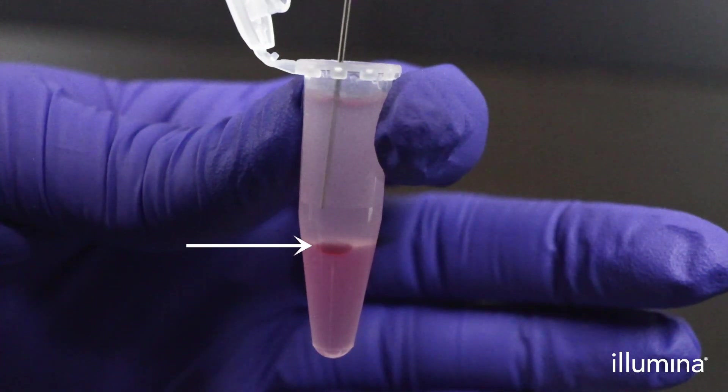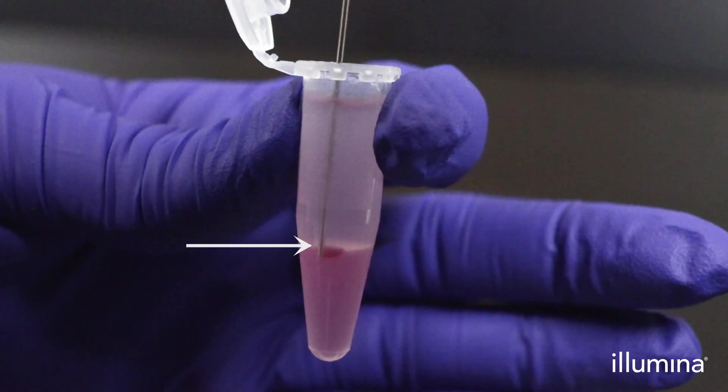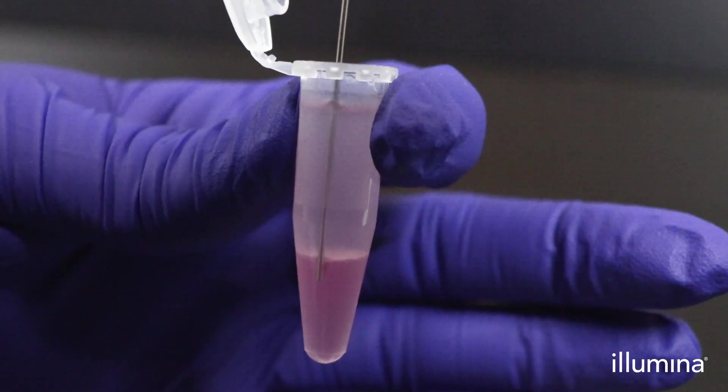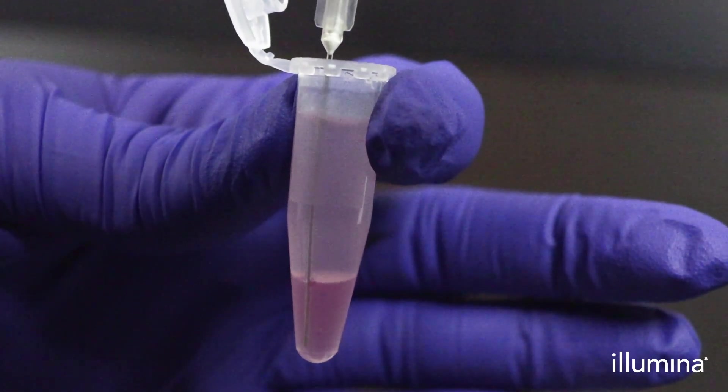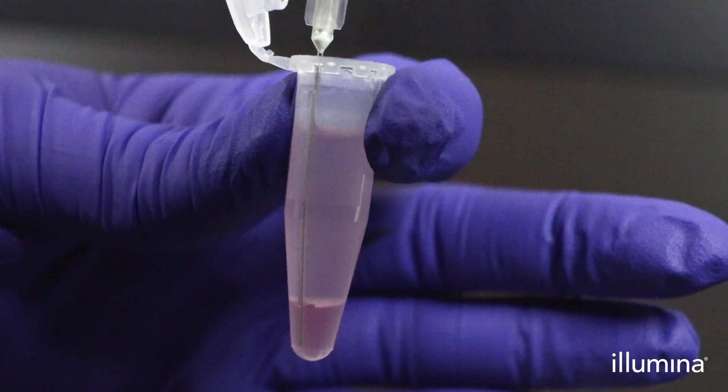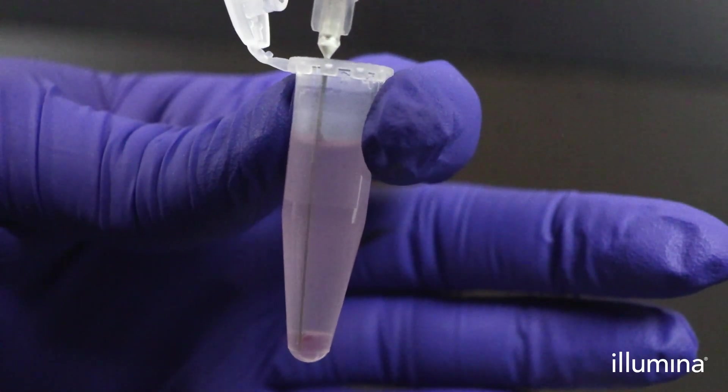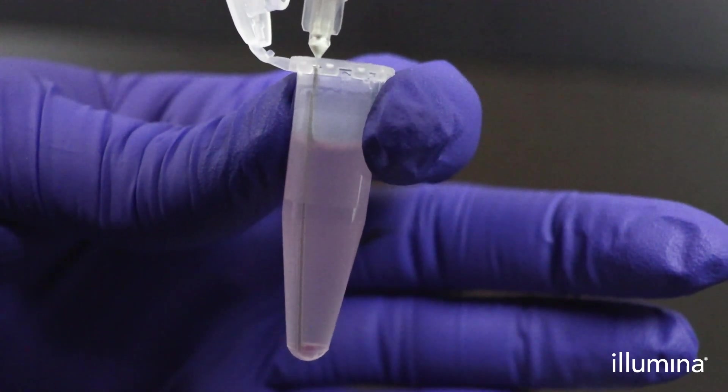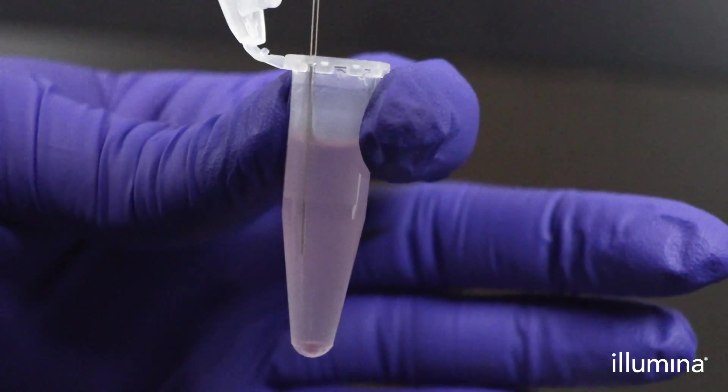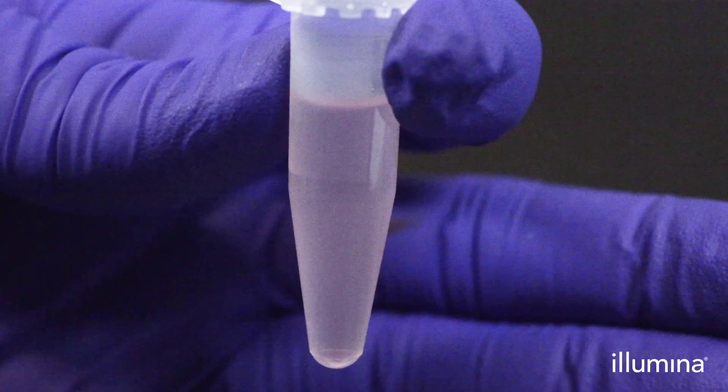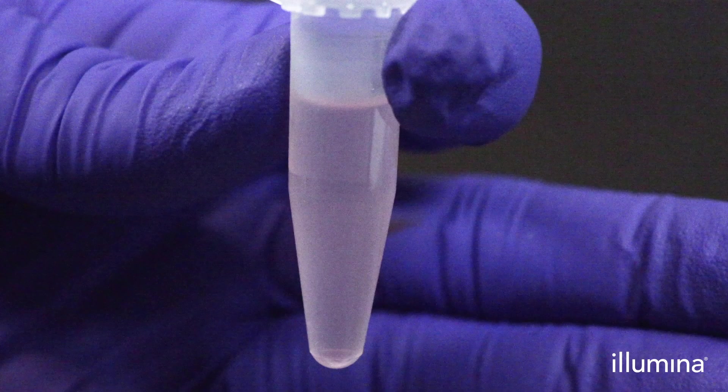After spinning down your samples in a benchtop minifuge for 5 to 10 seconds, obtain the 1 ml syringe used previously to aspirate all the bottom pink waste phase. Spin the samples down for another 5 to 10 seconds.